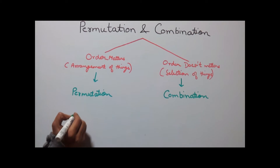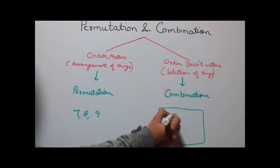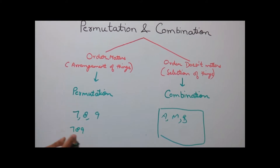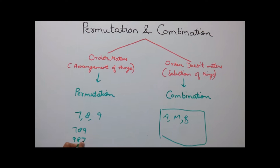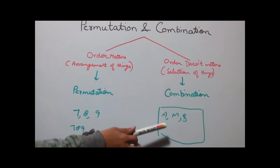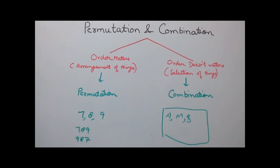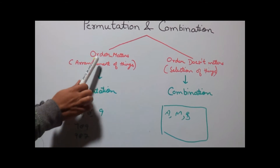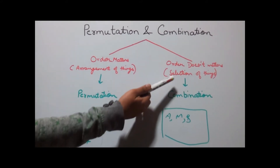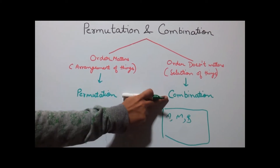Suppose you are having numbers say 7, 8 and 9, and in the second case you are having a tray of fruits which has apple, mango and banana. In the first case, order of digits matters because 7, 8, 9 means 789 but 9, 8, 7 means 987. Thus the arrangement or order of digits matters. Whereas in the second case with fruits, it does not matter how you place them — whether banana, mango, apple or apple, mango and banana. So where order matters we say it is arrangement of things — we are actually arranging the things. Where order does not matter, we simply select the things. This arrangement is known as permutation and this selection where order does not matter is known as combination.